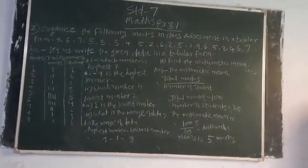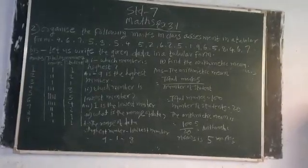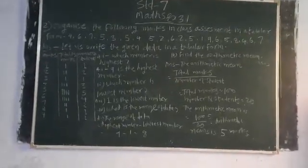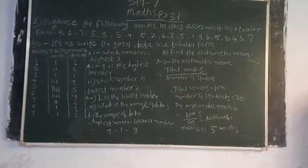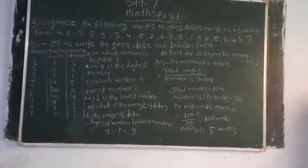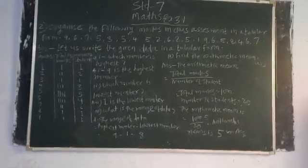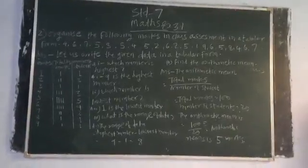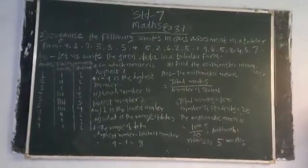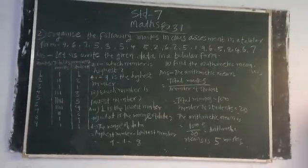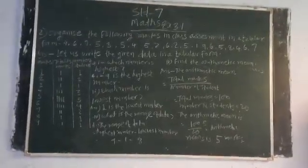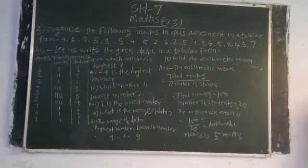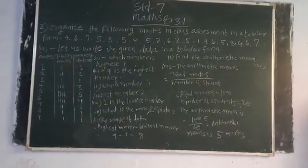Question number 3: what is the range of data? The range of data equals highest number minus lowest number. The highest number is 9 and the lowest number is 1. So range equals 9 minus 1, which equals 8.